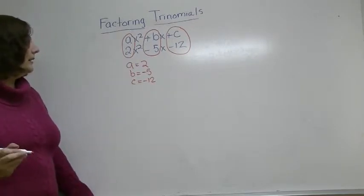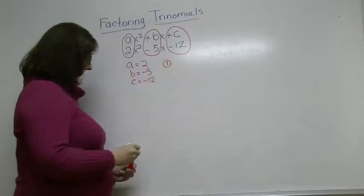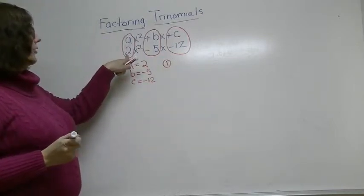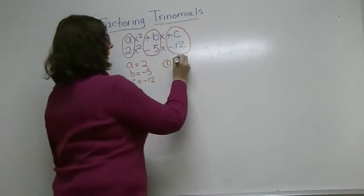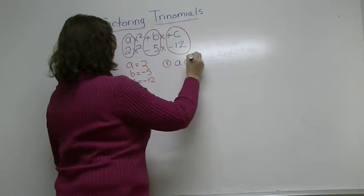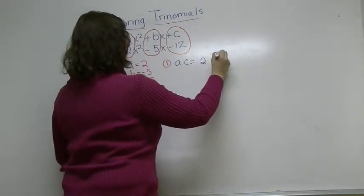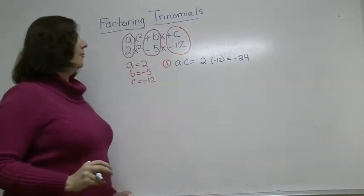And we're going to write out each of the steps that we need to do. Step number 1, we are going to multiply the A term times the C term. So we're going to do A times C, which is 2 times negative 12, which gives us negative 24.